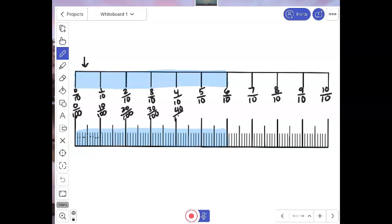So this would be thirty one hundredths. Forty one hundredths. Fifty one hundredths. Sixty hundredths. Seventy hundredths. Eighty hundredths. Ninety hundredths. And a hundred hundredths.